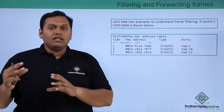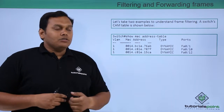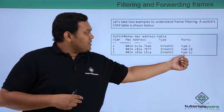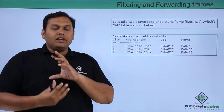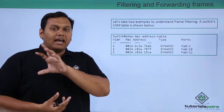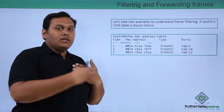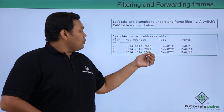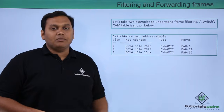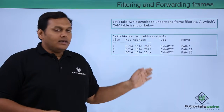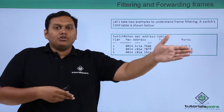As an example, a packet is transferred from Host A to Host B. Host B's MAC address is 15CA, and it is associated with interface FA 0/12. When the switch receives the frame from Host A, it reads the destination MAC address from the header and sends the frame only to FA 0/12, where that MAC address is listed in the table, and the frame reaches the destination.